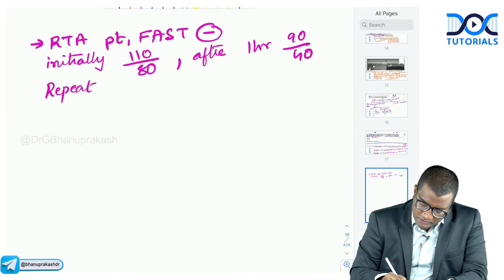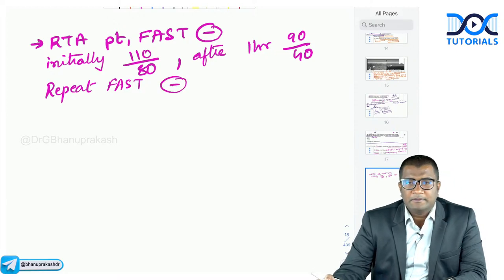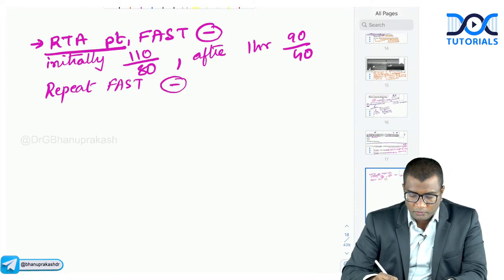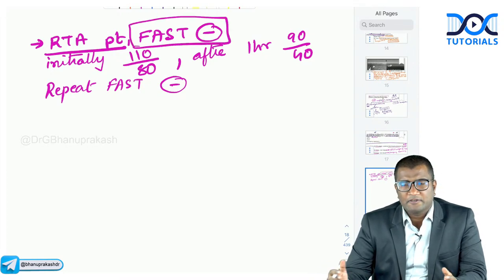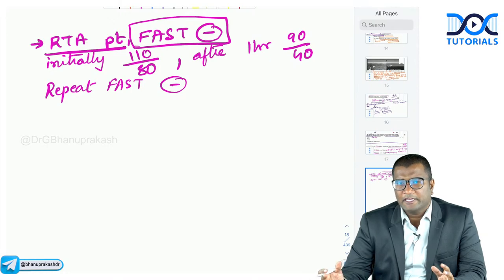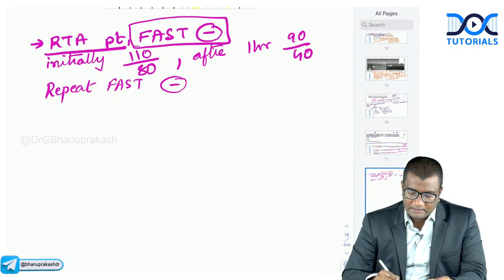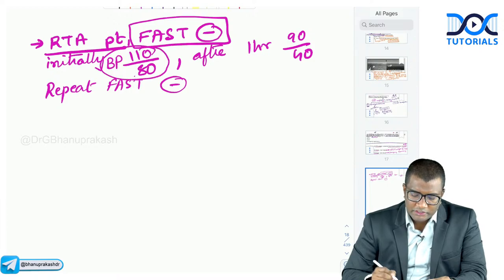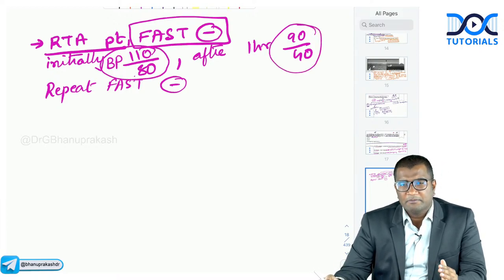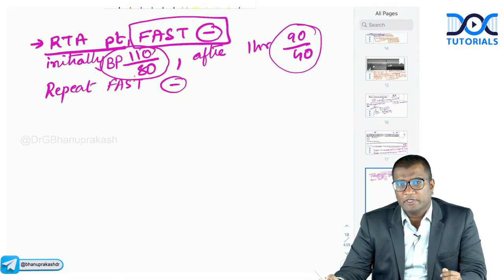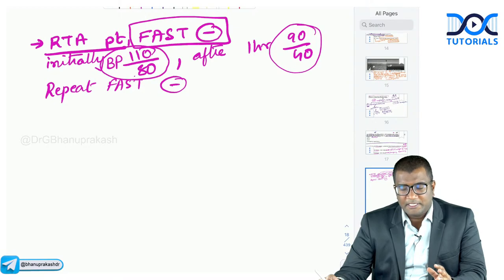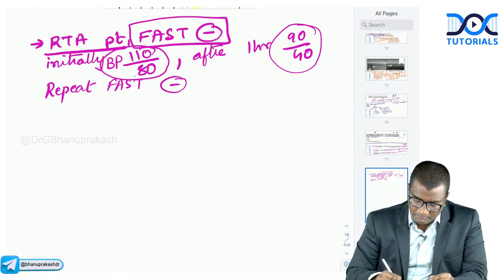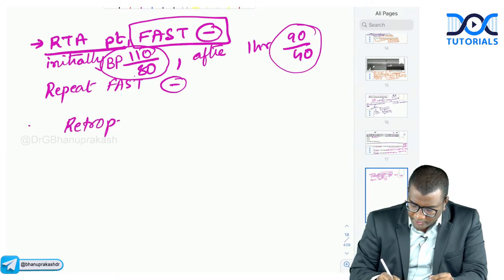An important scenario: RTA patient, initial FAST negative, BP initially 110/80, but after one hour BP drops to 90/40 and repeat FAST is also negative. What should you suspect? An important limitation of FAST is that it cannot evaluate retroperitoneal hematoma. Whenever there is retroperitoneal collection, FAST will be negative but the patient can still deteriorate hemodynamically.